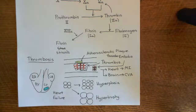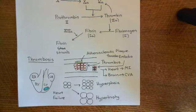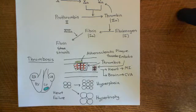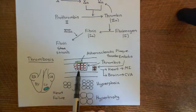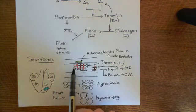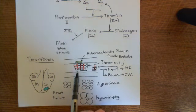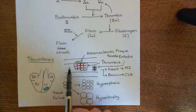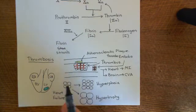Now let's talk about antithrombin-III, because antithrombin-III is basically an endogenous mechanism that the body has for trying to stop the formation of thrombi on the surface of endothelial cells.